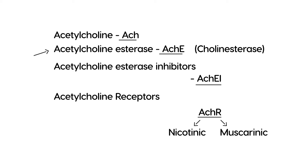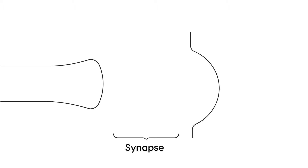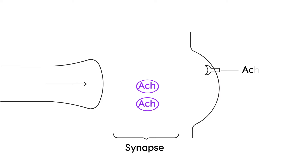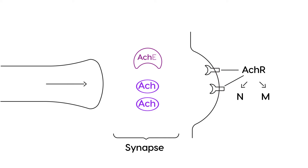Let's say you have your pre-synapse, your post-synapse, and in between you have the synapse. First, we have acetylcholine released from the pre-synaptic terminal — we'll draw little circles to represent the acetylcholine molecules. On the post-synaptic terminal you have receptors (ACHR) that catch those molecules, and there are two types: nicotinic and muscarinic. In the synapse there is the enzyme acetylcholine esterase.